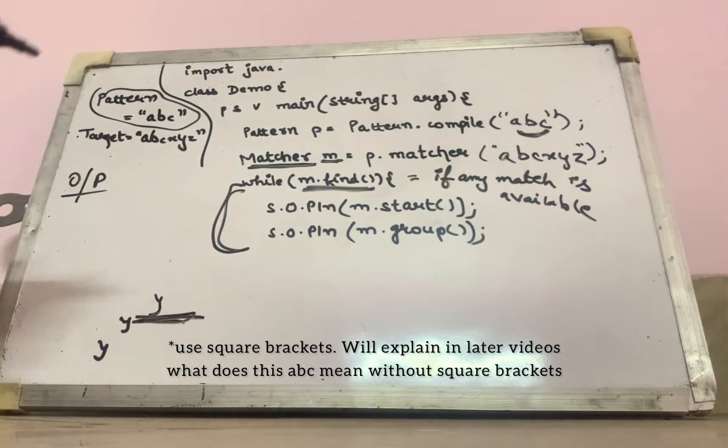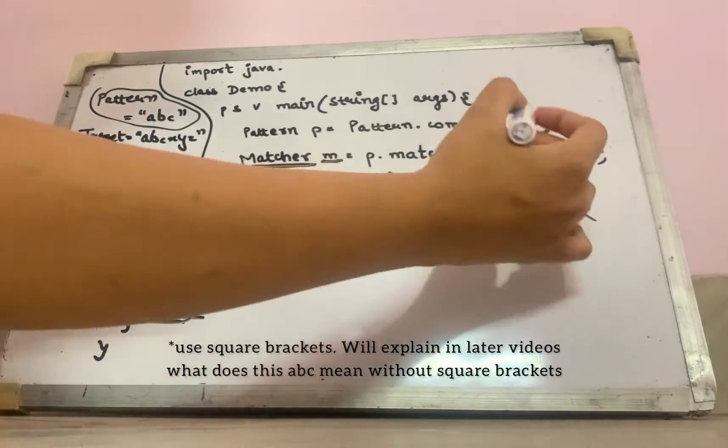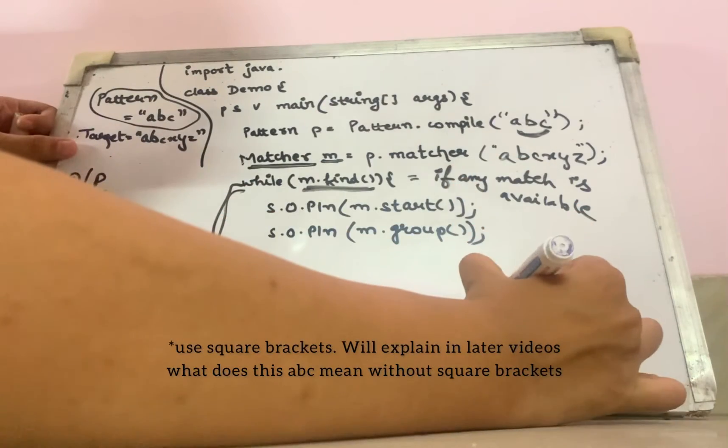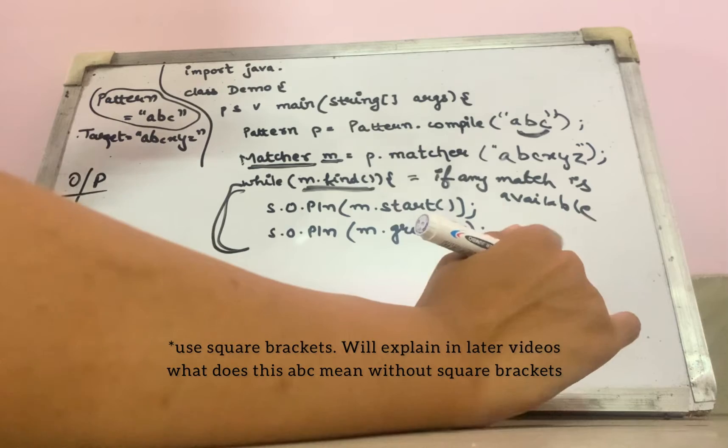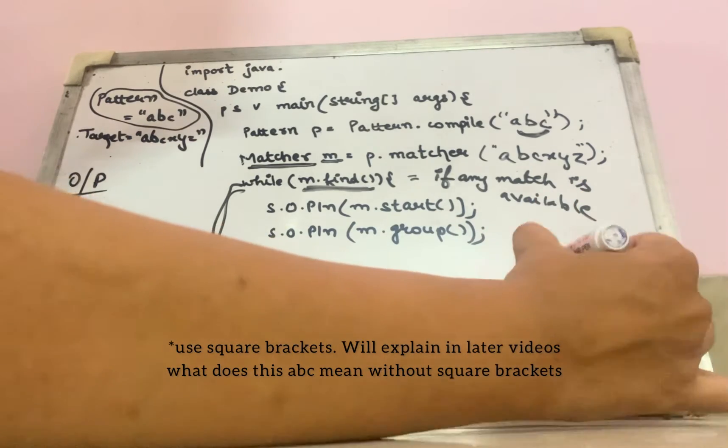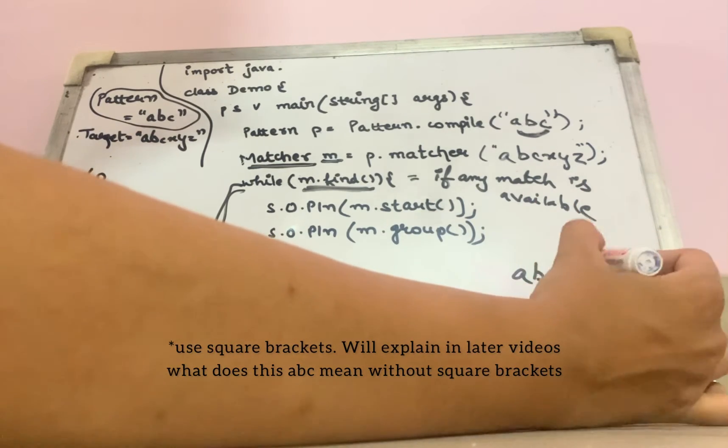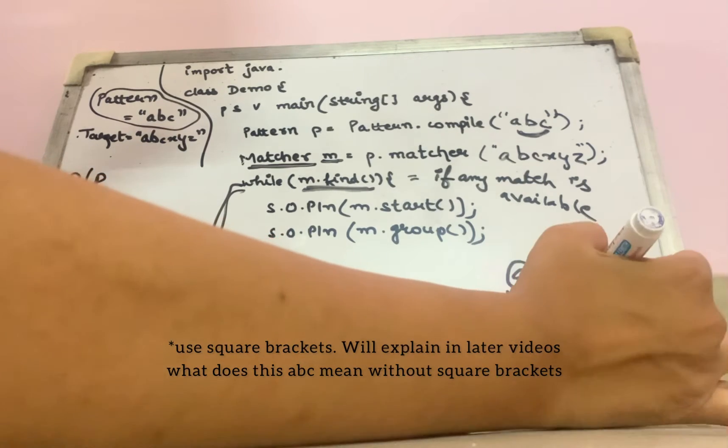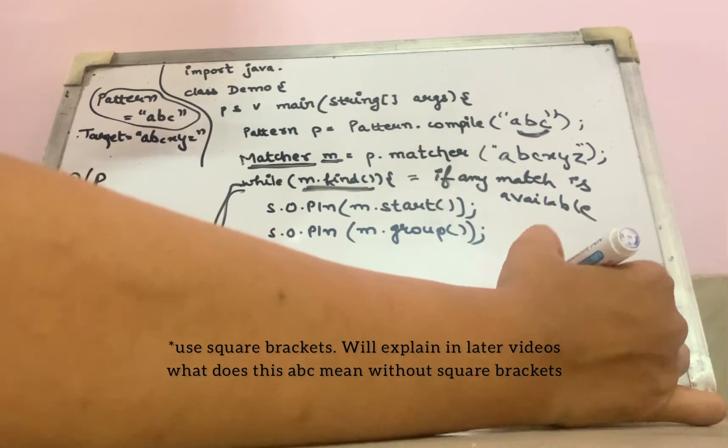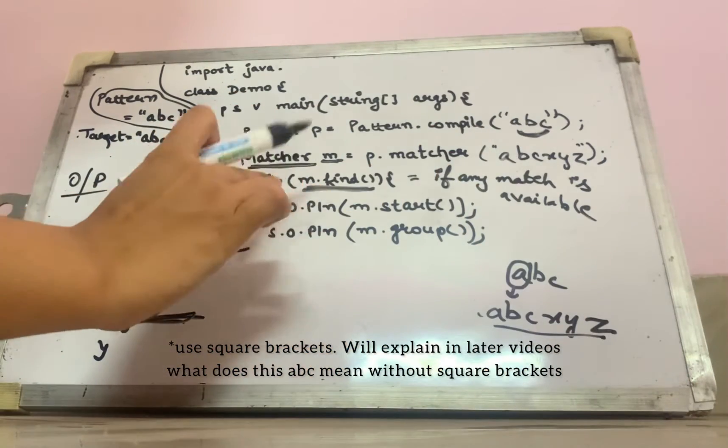So in our case, my target is a b c x y z and my pattern is a b c. First a will come. It will check in this target string. Does the match found? Yes. What does this statement going to do?